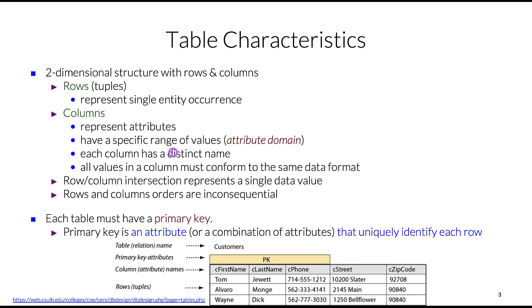Each table must have a primary key. There will be an attribute, or could be a combination of attributes, that will uniquely identify each row. For instance, in this table of customers, we identify as a primary key several attributes including first name, last name, and phone. This combination ensures the uniqueness for each row.